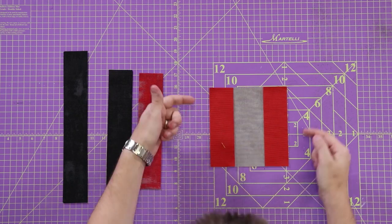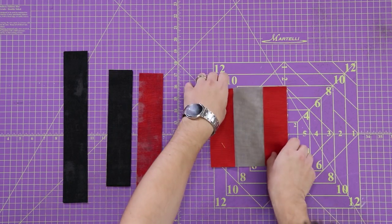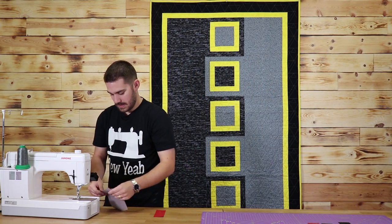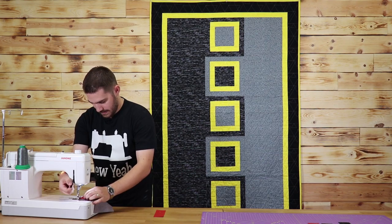And I'm going to sew a quarter inch seam down both sides. Then we'll go onto ironing, but I'll take this right over to the sewing machine. And sew.